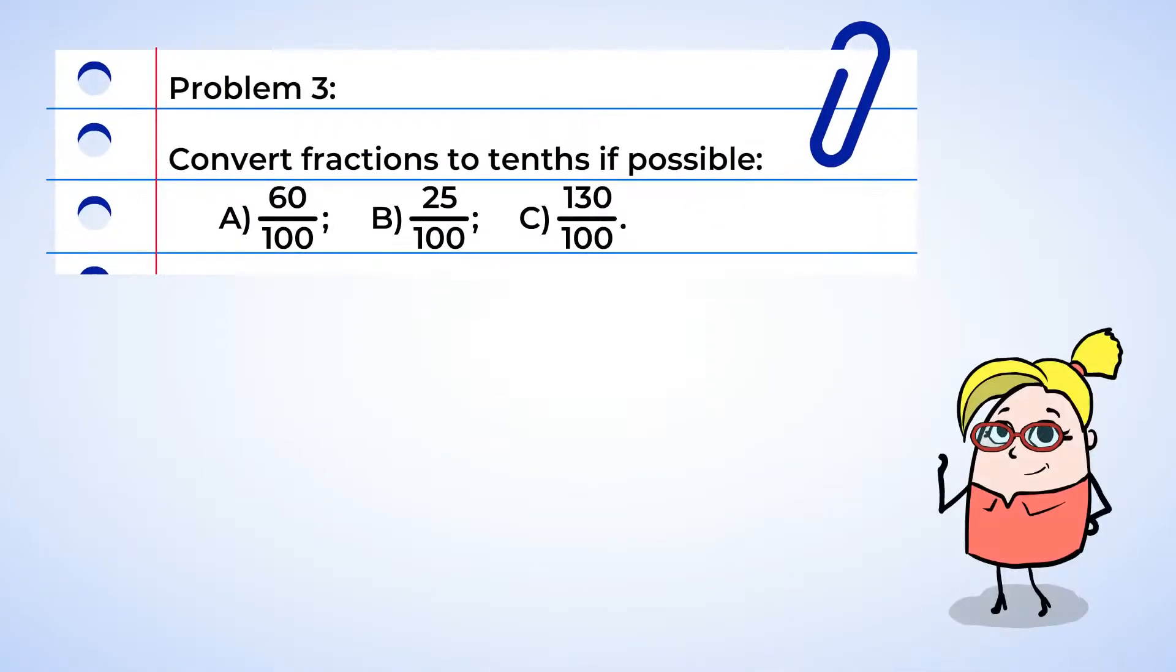Here we go! Practice time! Convert the fractions to tenths if possible. Alright, let's get started. Part A. The numerator ends in a zero. Yeah, so we can divide by 10. 60 divided by 10 is 6. So 60 hundredths will convert to 6 tenths.